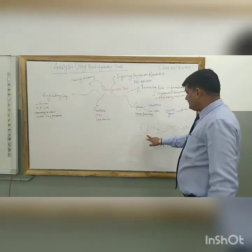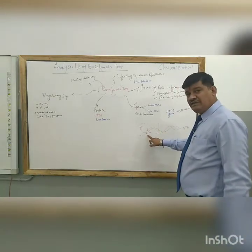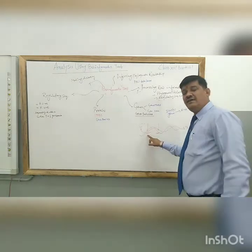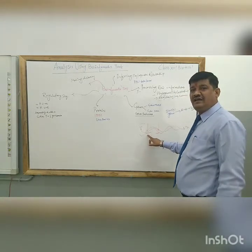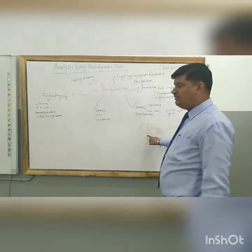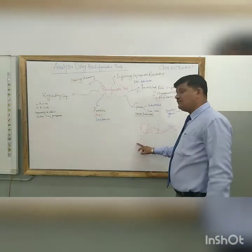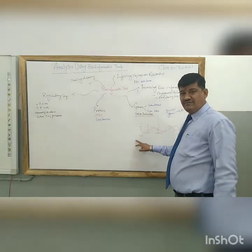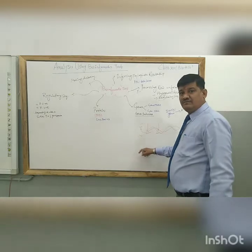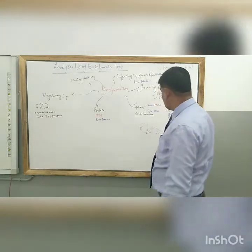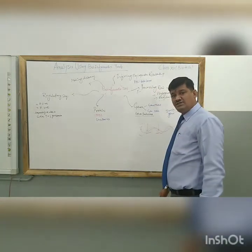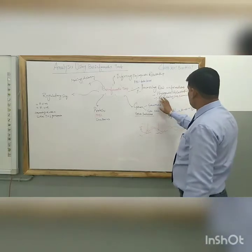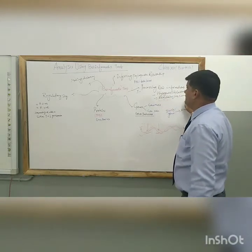Regulatory sequences are the part of the DNA which undergo transcription regulation either at an increasing level or a decreasing level. Because of that, these regulatory sequences are rich with AU — that is A for adenine and U for uracil. So they form an AU-rich region, meaning adenine-uracil rich region. This is the regulatory sequence.